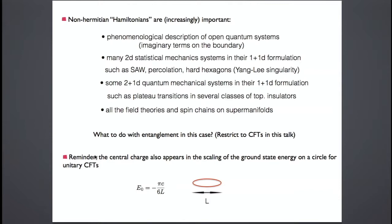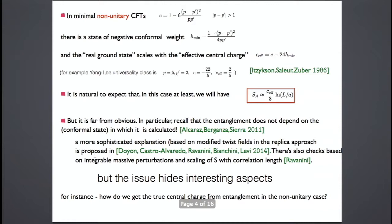Remember that the central charge which occurred in the entanglement is also something that tells you how the ground state energy of the theory on a circle of circumference L scales. It's well known that the ground state energy scales as −π/(6L) times the central charge. The role of non-unitarity in conformal field theory has been investigated quite a bit in the context of ground state energies. In the case of minimal non-unitary CFTs — these are conformal field theories that look a lot like the standard unitary minimal theories, only with slightly different values of the central charge — the Yang-Lee singularity is one example.